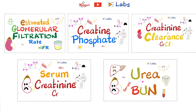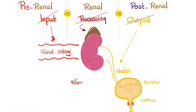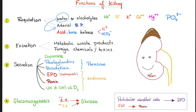Let's keep it simple — back to basics. Think of computer science: there's an input, a processing unit, and an output. The input to the kidney is the renal artery, the processing unit is the kidney itself, and the output is the ureter, bladder, and urethra. If the problem is in the input — less blood reaching the kidney — it's pre-renal. If the problem is in the kidney itself, it's intrarenal. If the problem is after the kidney, it's post-renal.